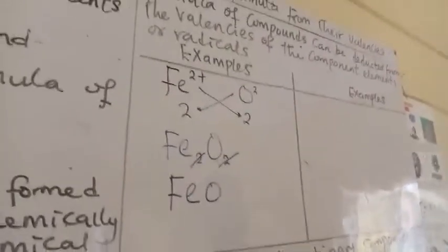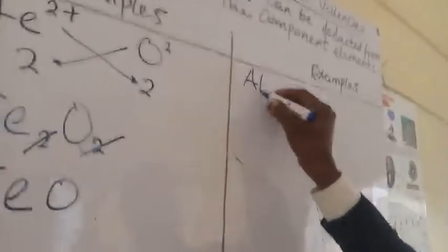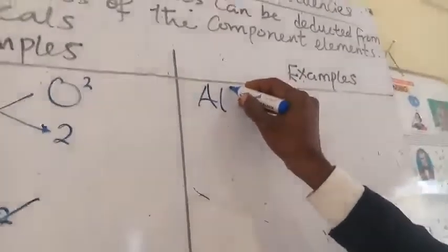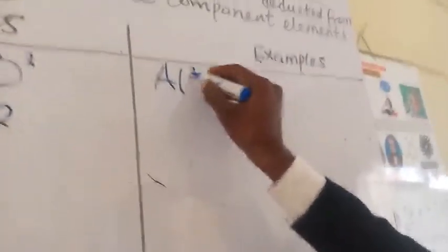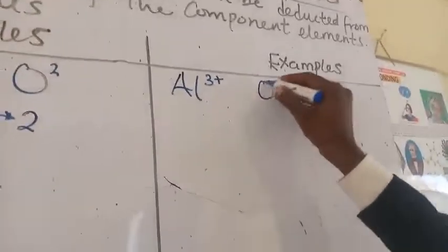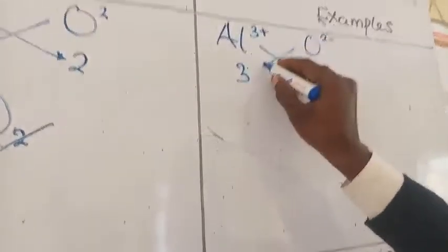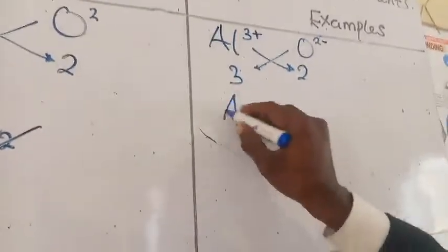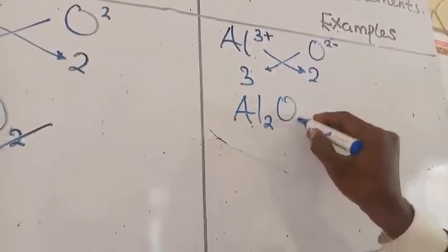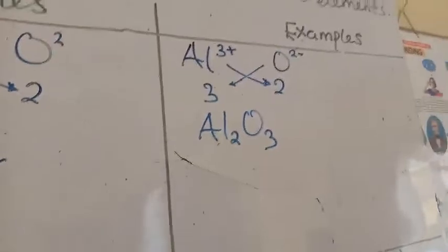Another example is aluminium oxide. If you have aluminium oxide, aluminium, the valency oxidation state is 3+. And then oxygen, as we all know, is 2-. So this is 3 and this is 2. When you do an exchange of radicals, you have Al2 and O3.